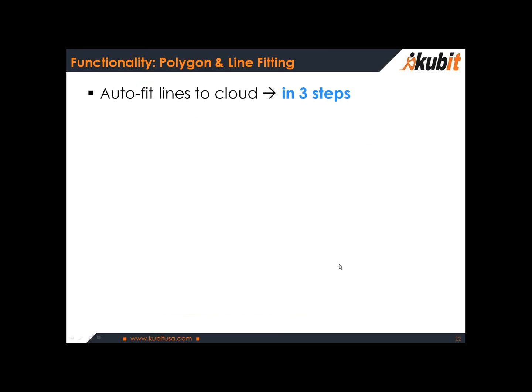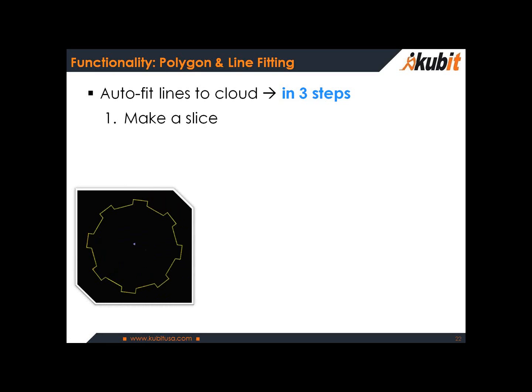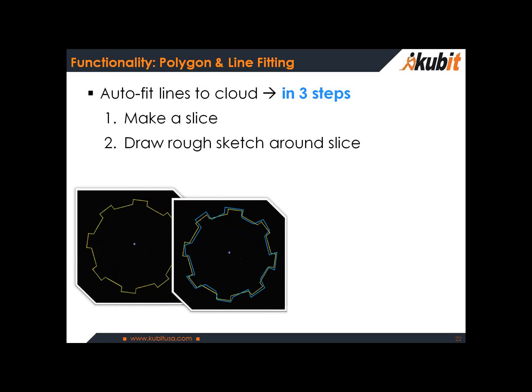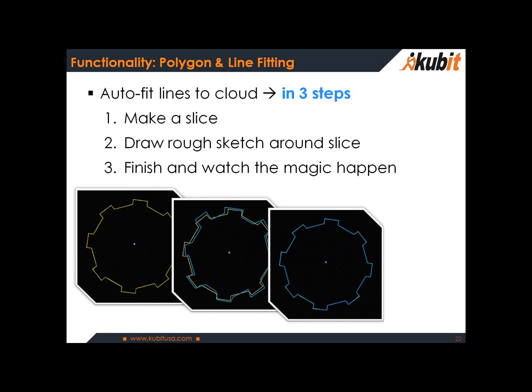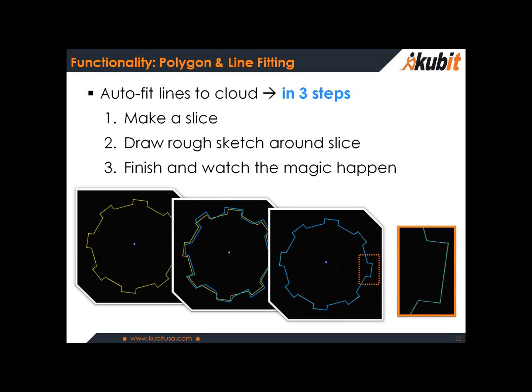Now this feature — polygon and line fitting — I'm very excited to show because it's really showing some potential from the development team with Qubit. Really an excellent feature they've added in: polygon fitting. You can now auto-fit lines to clouds in three easy steps. Step one is to make a slice like we did before. Step two is to draw a rough sketch around that slice. And from there you press finish and watch the magic happen — you watch the line work that you've drawn very roughly conform to the cloud. It's quite a nice tool, and I'd like to demonstrate it for you now.